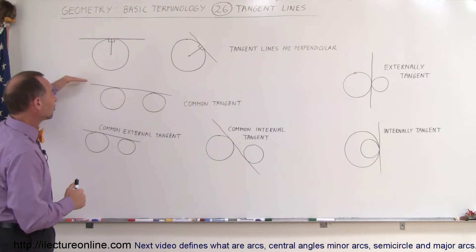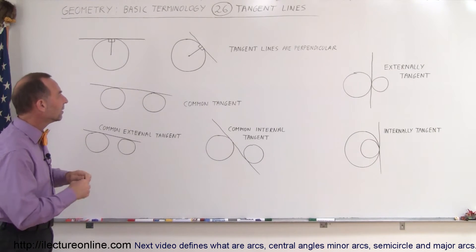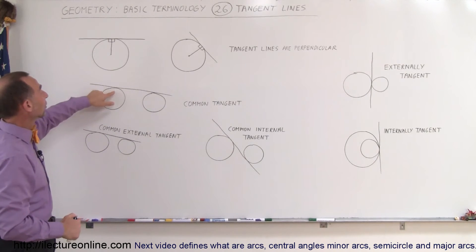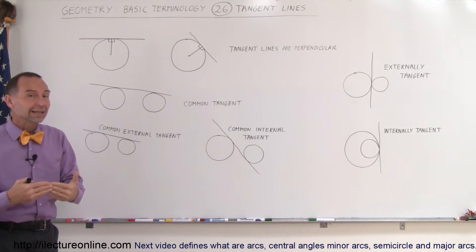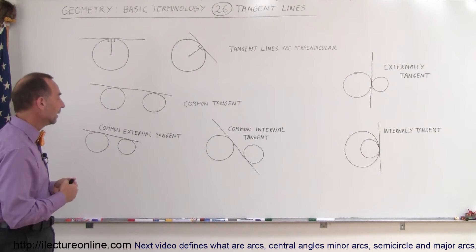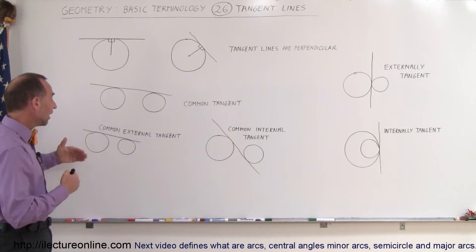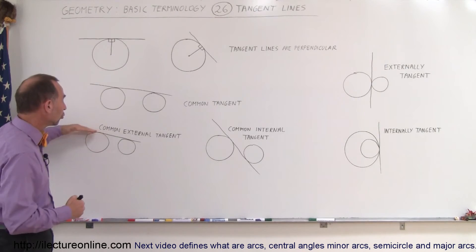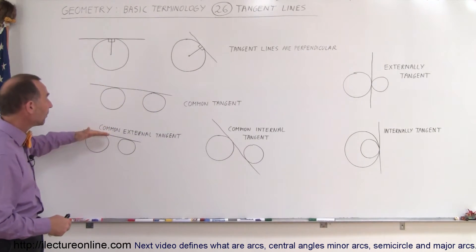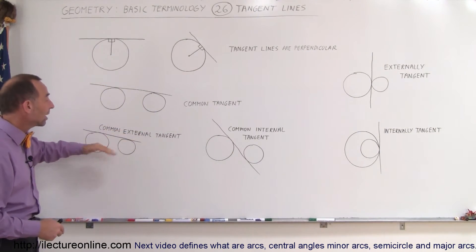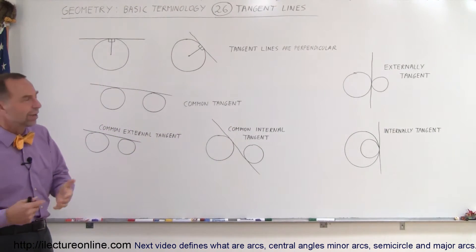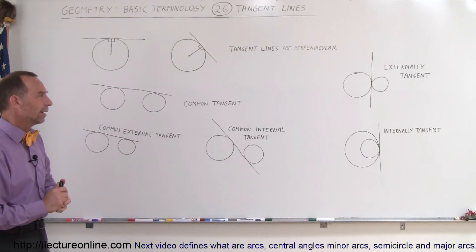When we have two circles and we draw a line where they touch both circles at the same time, that is then called a common tangent, or a common tangent line. The tangent line can either be external to the circles or it can be internal to the circles. So they're called a common external tangent line and a common internal tangent line. Either one is fine.